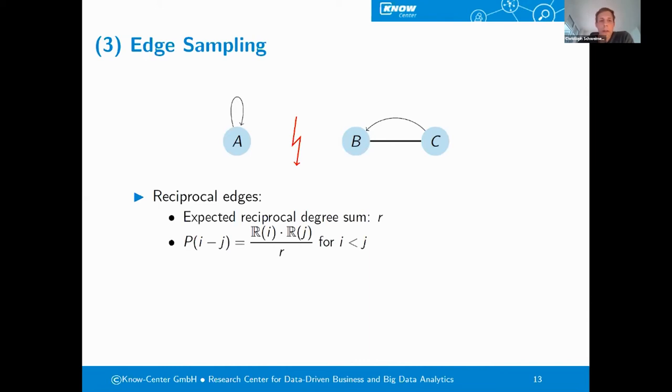In the next step, we are sampling the directed edges. Now, to avoid these situations on the right-hand side between the two nodes B and C, we at first always need to make sure that we do not sample an edge that has already been sampled as a reciprocal edge. But for all the others, we are applying basically the same idea, the Chung-Lu model-like approach, where we would first compute the expected number of directed edges, and then sample directed edges proportional to the node degrees.